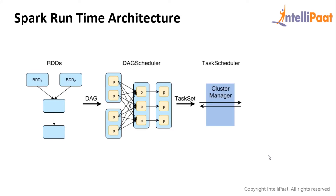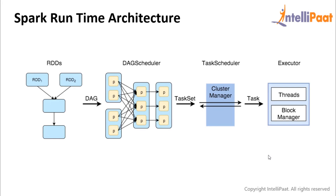The driver program talks to the cluster manager and negotiates for resources. The cluster manager then launches executors on the worker nodes on behalf of the driver. The driver sends tasks to the cluster manager based on data placement. Before executors begin execution, they register themselves with the driver program so that the driver has a holistic view of all the executors. Once this is done, executors start executing the various tasks assigned by the driver program. The driver program monitors the set of executors that run, and when the main method exits or the stop method of the Spark context is called, it terminates all executors and releases resources from the cluster manager.